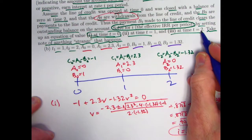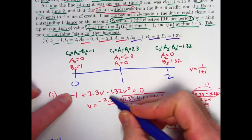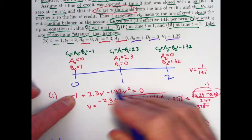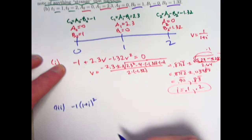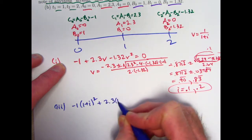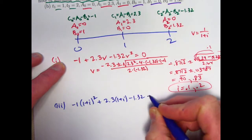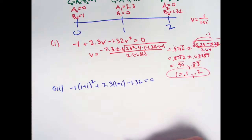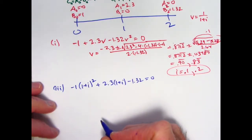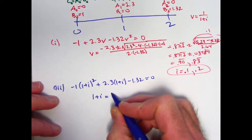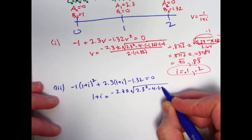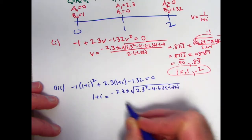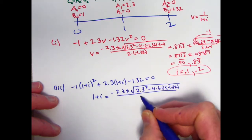At time 2, then we do this in terms of 1 plus I. Effectively, we just multiply everything by 1 plus I squared. Because we're promoting in time accumulating to time 2. The negative 1 gets promoted by 2 periods. The 2.3 gets promoted by 1 period. And the minus 1.32 stays where it is. There we have a quadratic equation in 1 plus I. Which I could expand out to get a quadratic equation in I. But it's going to be simpler to use the quadratic formula for this in terms of 1 plus I.